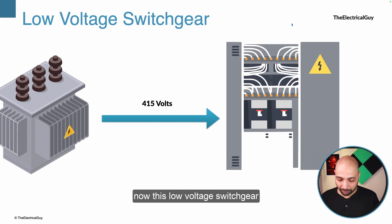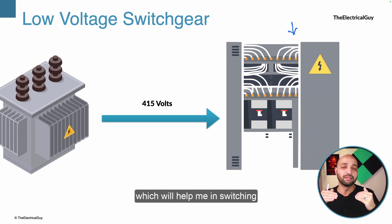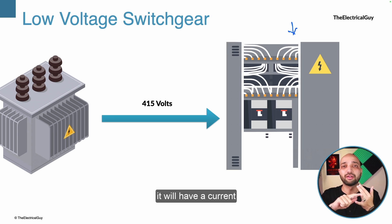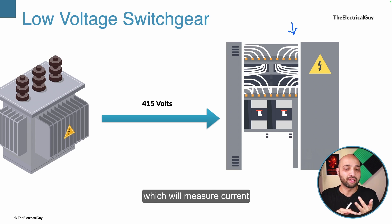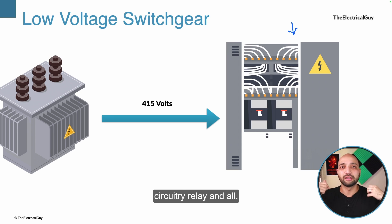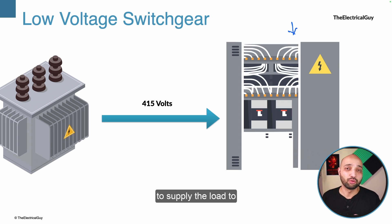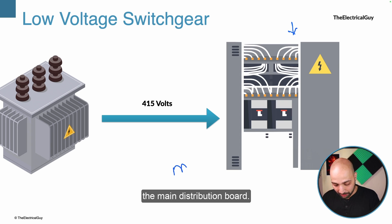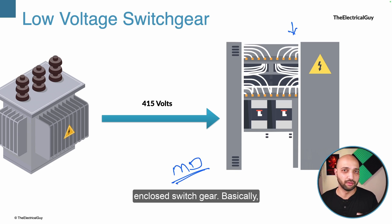This low voltage switchgear panel will have all the necessary components: a main circuit breaker for switching on and off in normal as well as abnormal conditions, a current transformer to measure current, a voltage transformer to measure voltage, plus control circuitry, relays, and more. This panel is necessary to supply the load to the buildings, and we can call it the main distribution board — a metal enclosed switchgear.